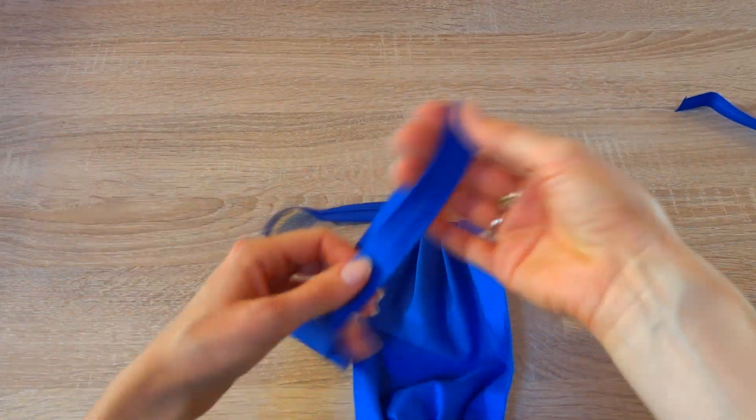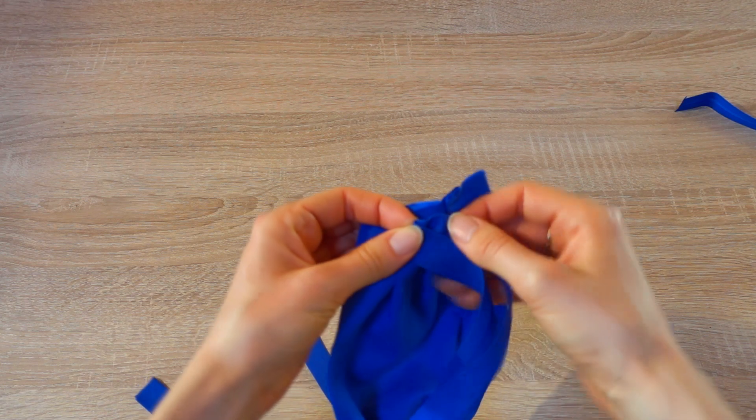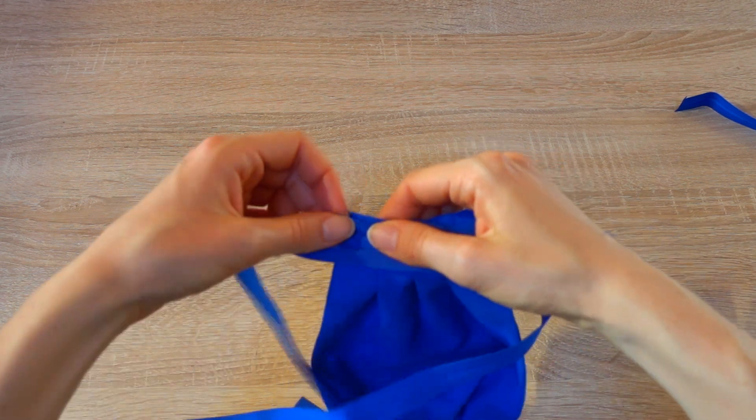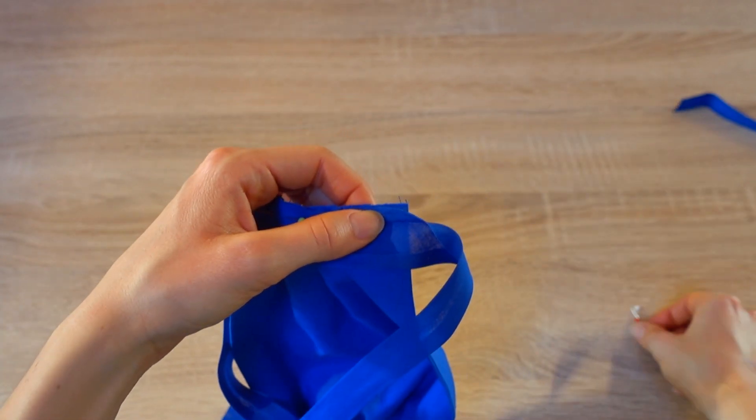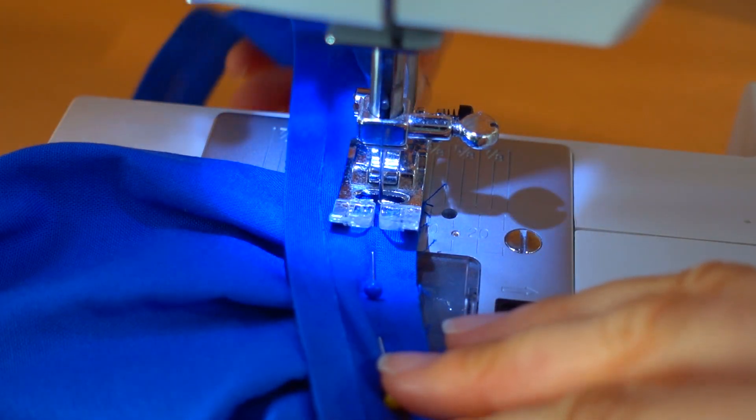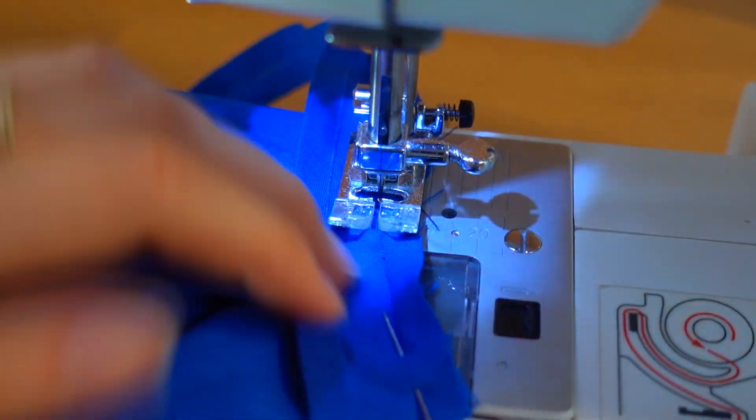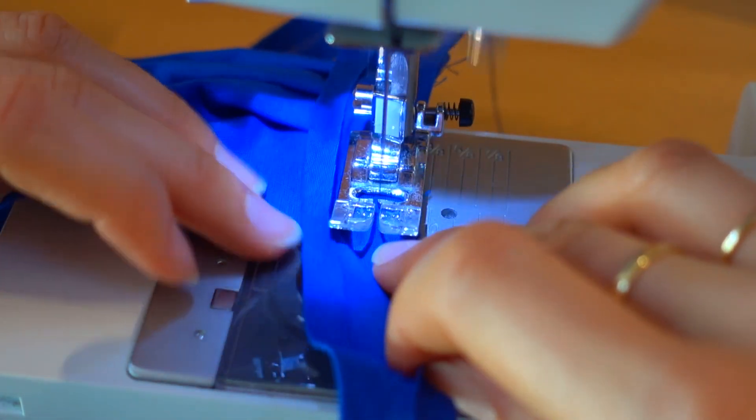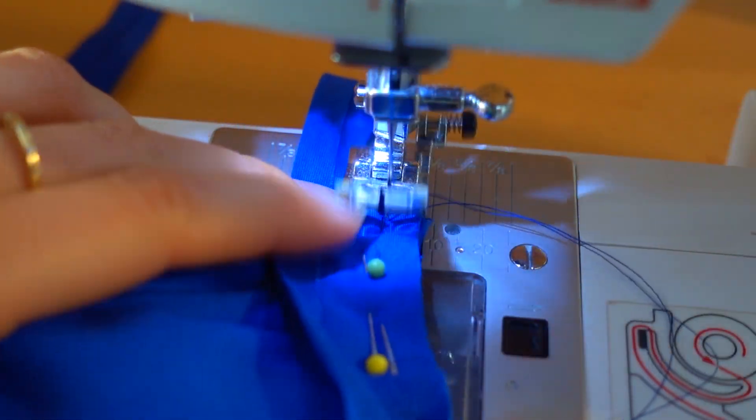Do the same on both sides of the mask. Sew along the pre-ironed fold. And don't forget to secure the stitches at the beginning and at the end. When you're done, cut off the threads. Do this on both sides of the face mask.